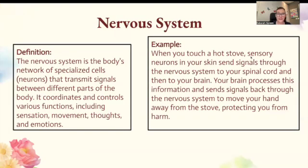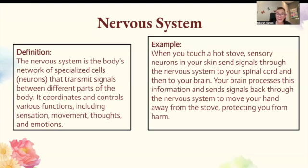Starting with the nervous system. The nervous system is the body's network of specialized cells — neurons — that transmit signals between different parts of the body. It coordinates and controls various functions, including sensation, movement, thoughts, and emotion. For example, when you touch a hot stove, sensory neurons in your skin send signals through the nervous system to your spinal cord and then to your brain. Your brain processes this information and sends a signal back through the nervous system to move your hand away from the stove, protecting you from harm.